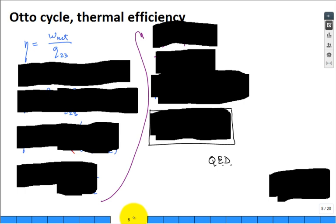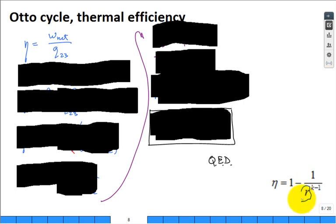Basically, the thermal efficiency is a function of the compression ratio and K. And what is K for air? 1.4.